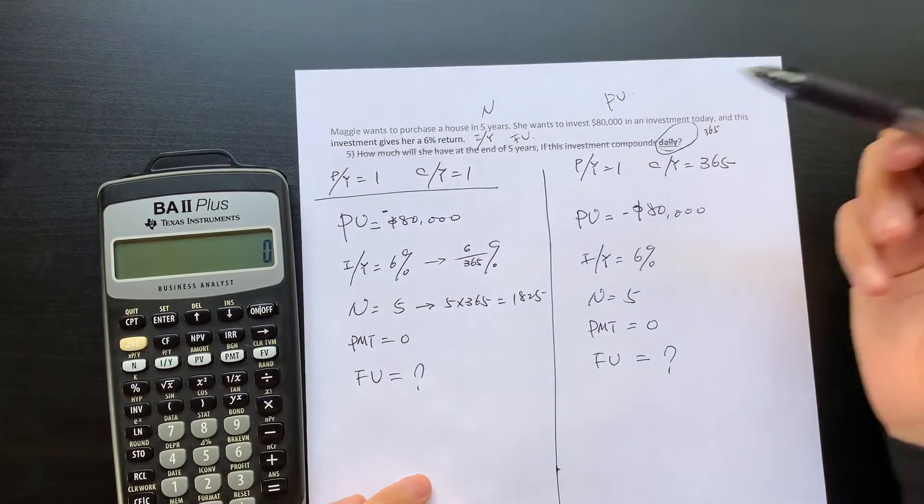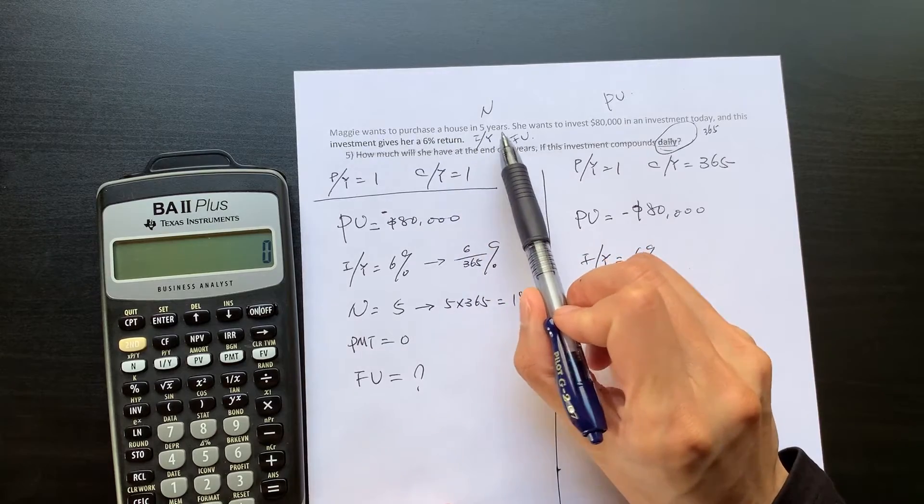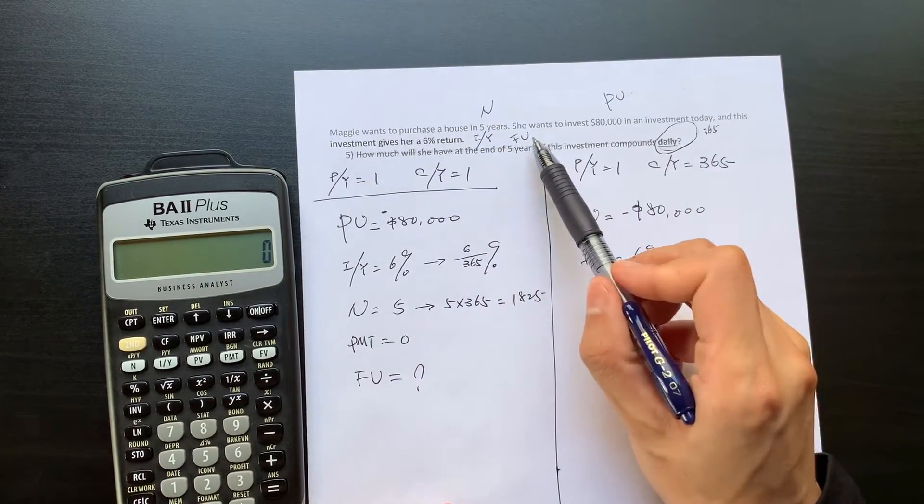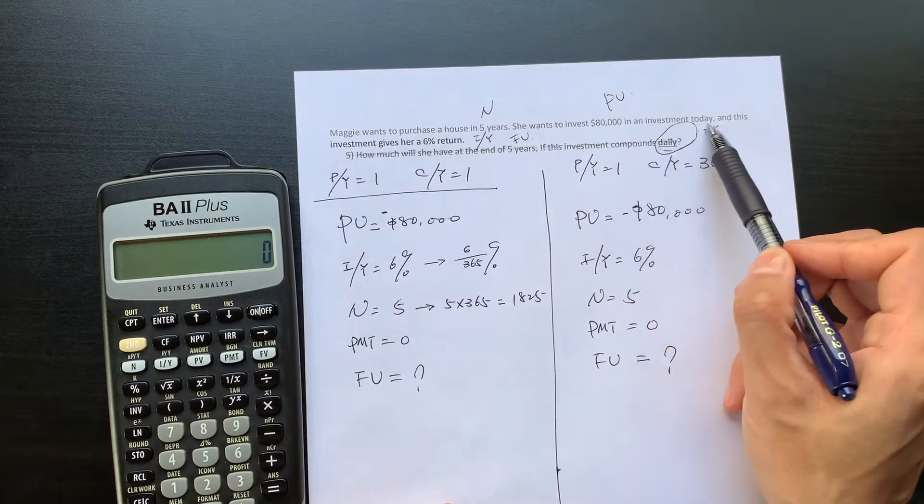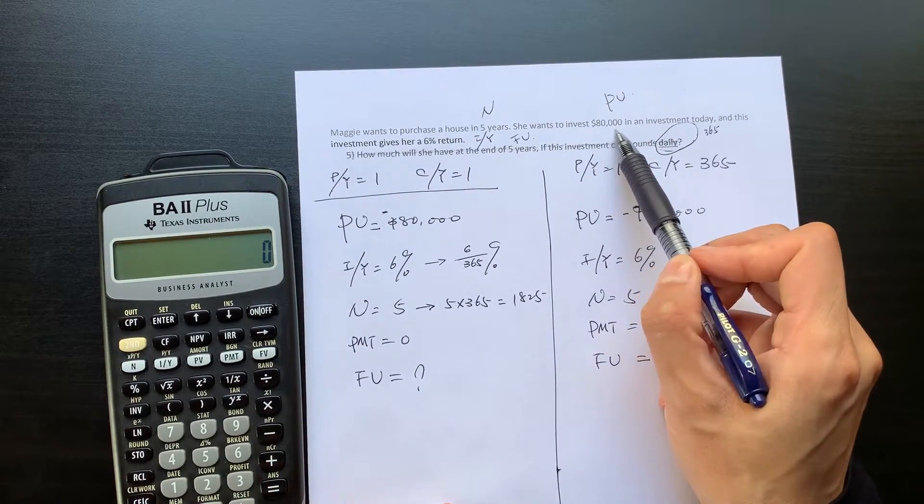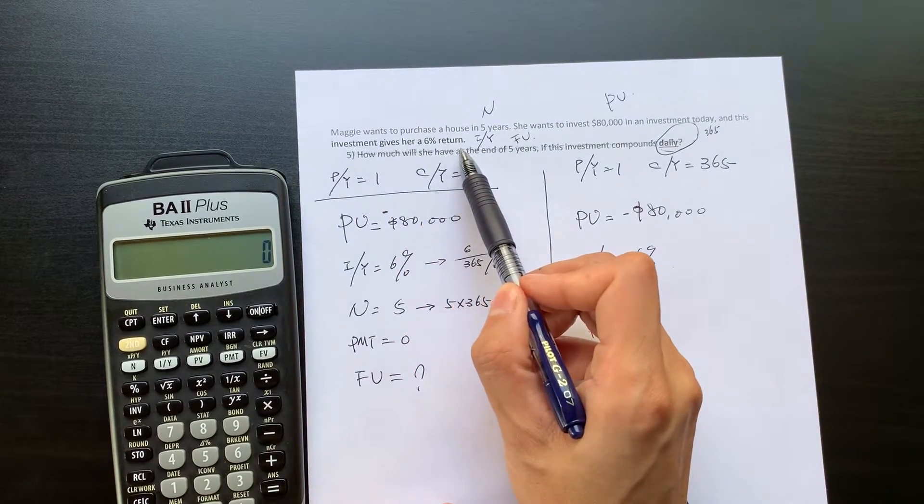Maggie wants to purchase a house in five years. This is your N. Then she wants to invest $80,000 in an investment today. $80,000 is your present value. And this investment will give her a 6% return.